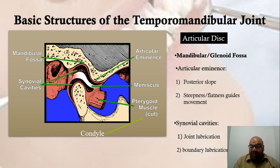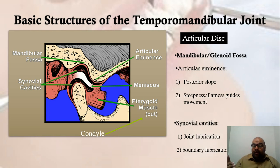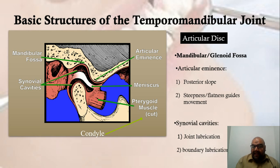The upper joint cavity is involved in translatory movement, meaning the condyle not only rotates around its axis but actually moves down in the glenoid fossa. This translatory movement takes place when there are lateral mandibular movements, specifically when we open our jaws more than 15 to 20 millimeters. Both the upper and lower joint spaces are lubricated by synovial fluid.